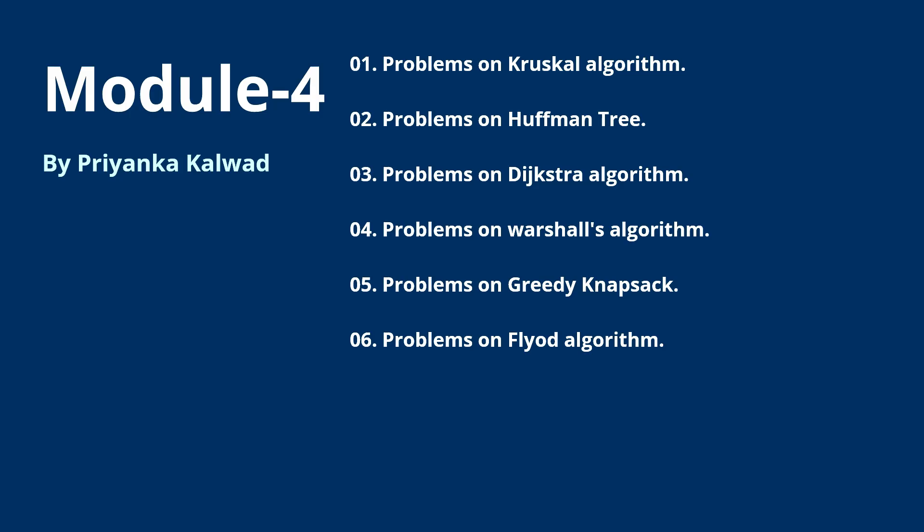Module 4 has six questions and they are all problem-based — there is no theory. The first is Kruskal's algorithm, second is Huffman, third is Dijkstra, fourth is Warshall's, fifth is greedy knapsack, and sixth is the Floyd algorithm. If you are focusing only on passing, practice any three problems from the first four and you will be able to pass and score full 20 marks from this module.